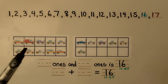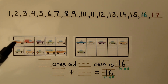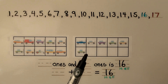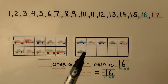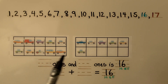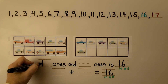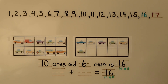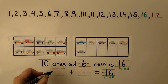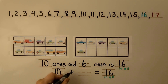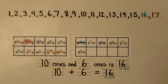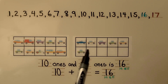We can see there are 10 cars in the first 10-frame because it's full — we don't need to count them, we know the 10-frame is full, there are 10 cars. We can count the cars in the second 10-frame: 1, 2, 3, 4, 5, 6. There is 10 and 6 more. Remember, 10 ones and 6 ones is 16. That's 16 in all. We can write an addition sentence. The total number of all the objects is the number in all — it's how many are in both 10-frames.